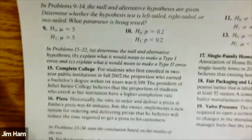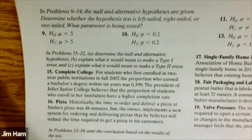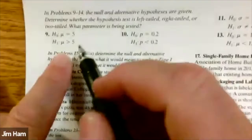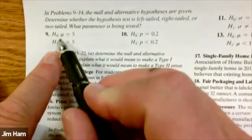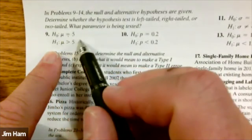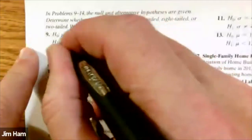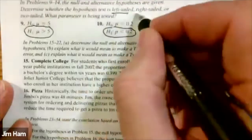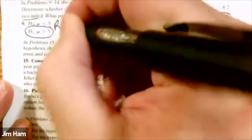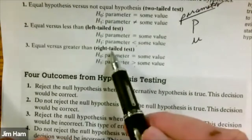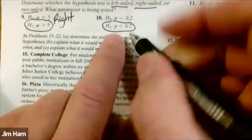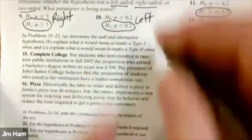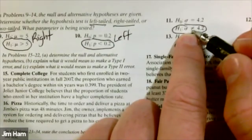Let's take a look at a couple of examples from the homework. In these problems, they ask: are you dealing with a left-tailed test, a right-tailed test, or a two-tailed test? Focus on the alternative hypothesis in each case and look at the sign. Because of the greater than sign, that one is a right-tailed test. If you have a less than sign, that's a left-tailed test. If you see the not equal to sign, that is a two-tailed test. So: less than — left, greater than — right, not equal to — two-tailed.